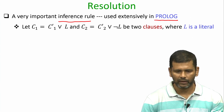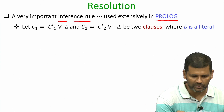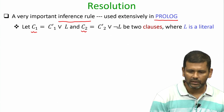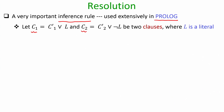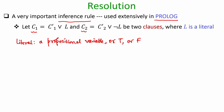So what exactly is this resolution rule? It says the following: imagine you are given two clauses C1 and C2. The important property here is that I have a literal L which is present in positive form in C1 and in negative form in C2. You can imagine that C1 is a large clause consisting of one or more literals, and one of the literals is L. A literal is a propositional variable or the constants true and false.